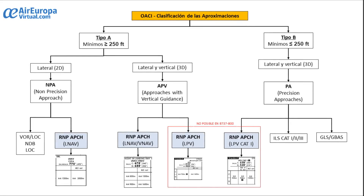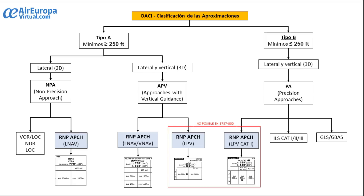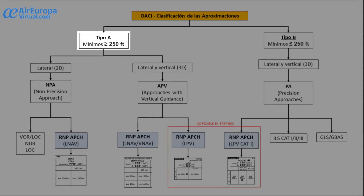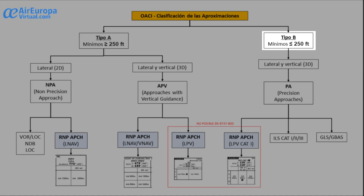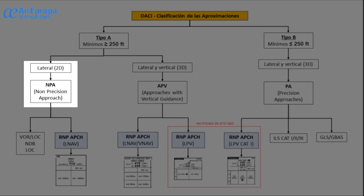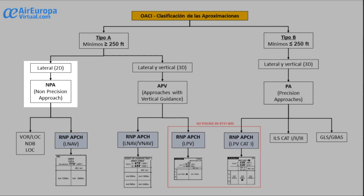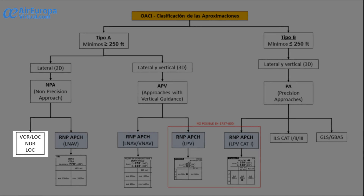We summarize the types of approaches and how they are classified within the PBN concept. Currently the approaches are classified according to the approach minima: Type A with minimums greater than or equal to 250 feet, and Type B with minimums less than or equal to 250 feet. In Type A we have non-precision approaches within the group called 2D with only lateral guidance. Here we find the LNAV, NDB and LOC approaches.